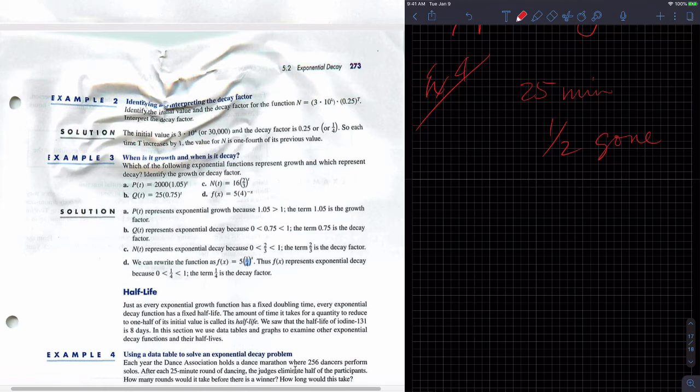How many rounds would it take before there is a winner? How long would it take? Okay, so let's, first we want to think about the model, but maybe we can make a little table first. So at time 0, how many dancers do we have? Well, we have 256 dancers, right?